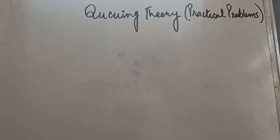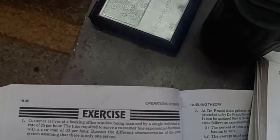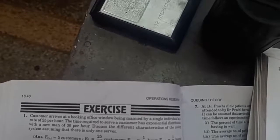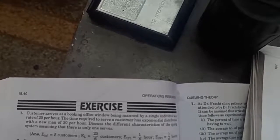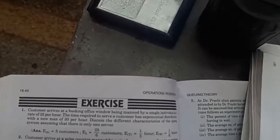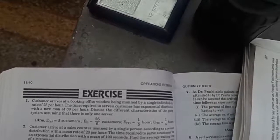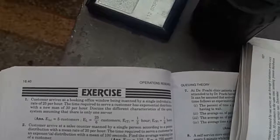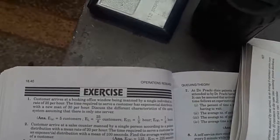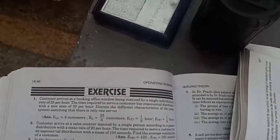Let us discuss various practical problems in queuing theory. In the first question, customers are arriving at a booking office manned by a single individual at the rate of 25 per hour, and the time required to serve a customer has an exponential distribution with a mean of 30 per hour. We have to discuss various characteristics of the queuing system, assuming a single server.